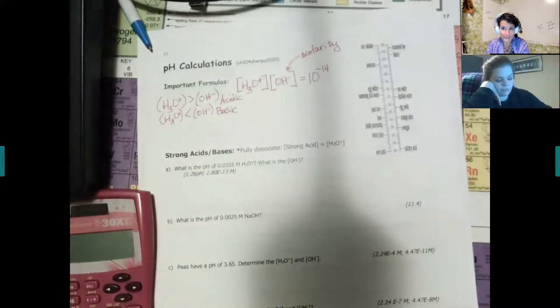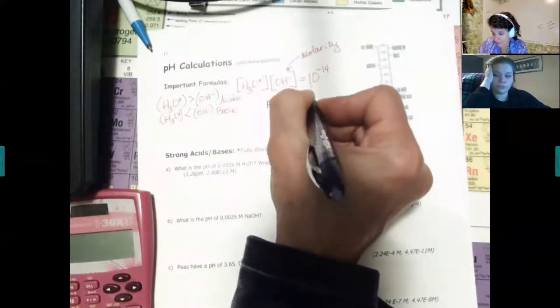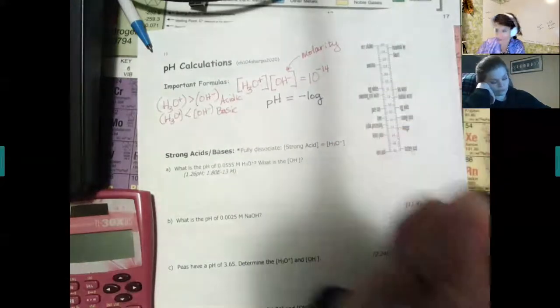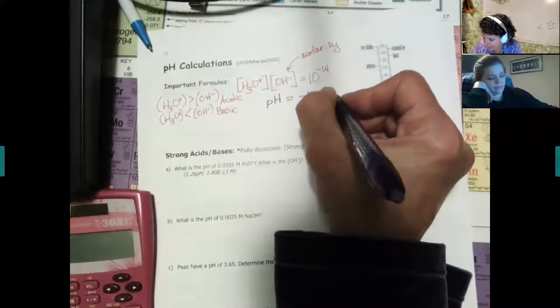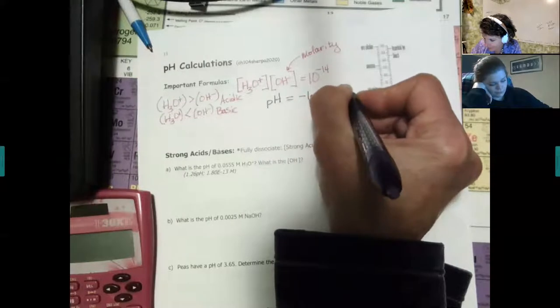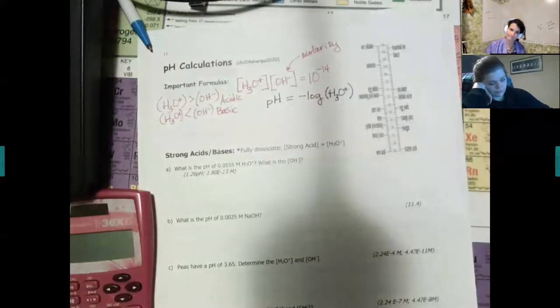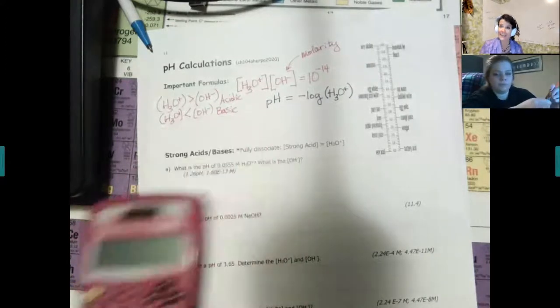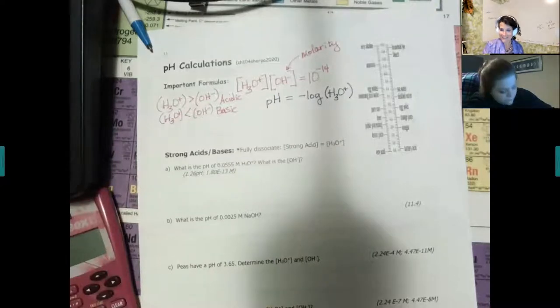Soren Sorenson — I mentioned him in the video, he has his own slide — said, let's just create a scale called the pH scale. It was 1909, only about 111 years ago, that he came up with this scale. pH is a calculation.